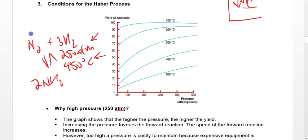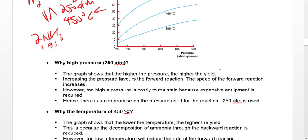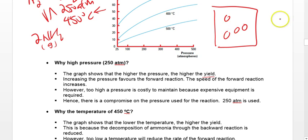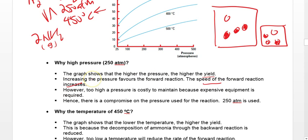All the reactants and products are gases. For gaseous reactants, increasing pressure tends to increase the yield and favors the forward reaction. Imagine particles in a container — if you increase pressure, you bring them closer together, giving a higher tendency to react, making the forward reaction faster and increasing yield. However, we don't increase to, say, 1,000 atm because making containers strong enough for extreme pressure is very costly. A compromise of 250 atm is used.